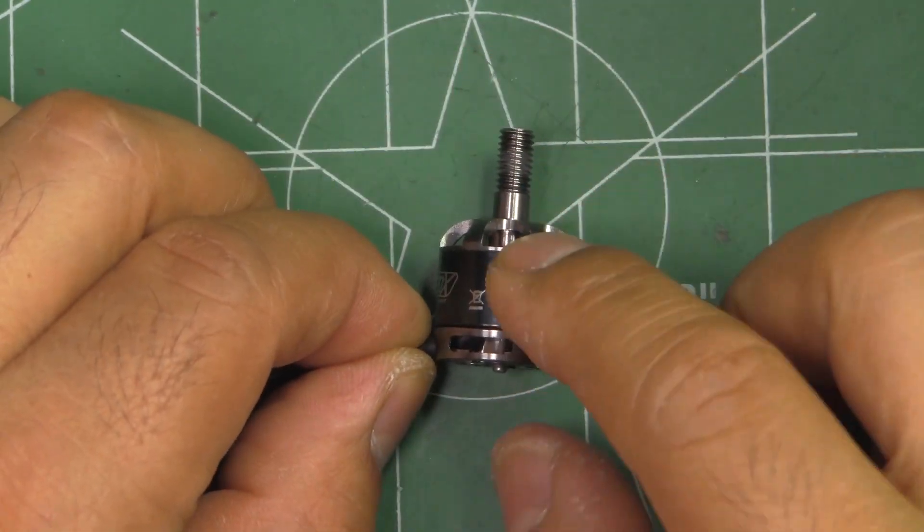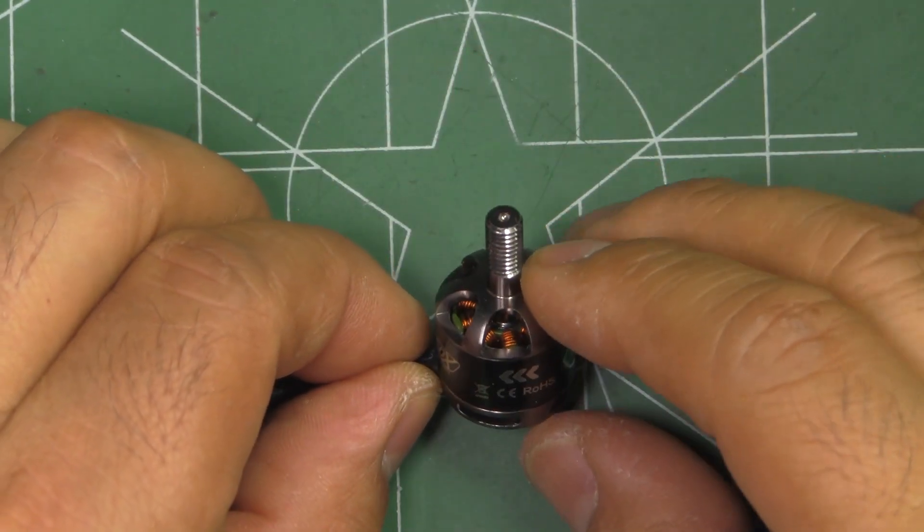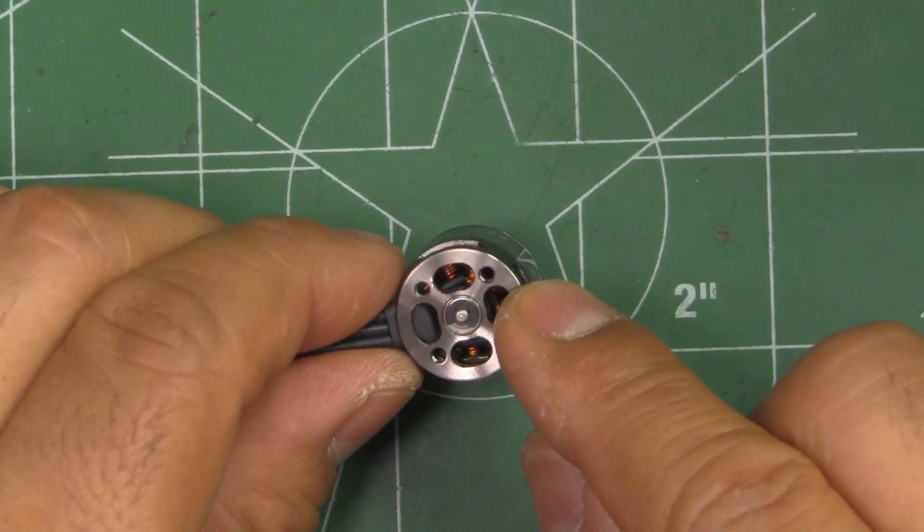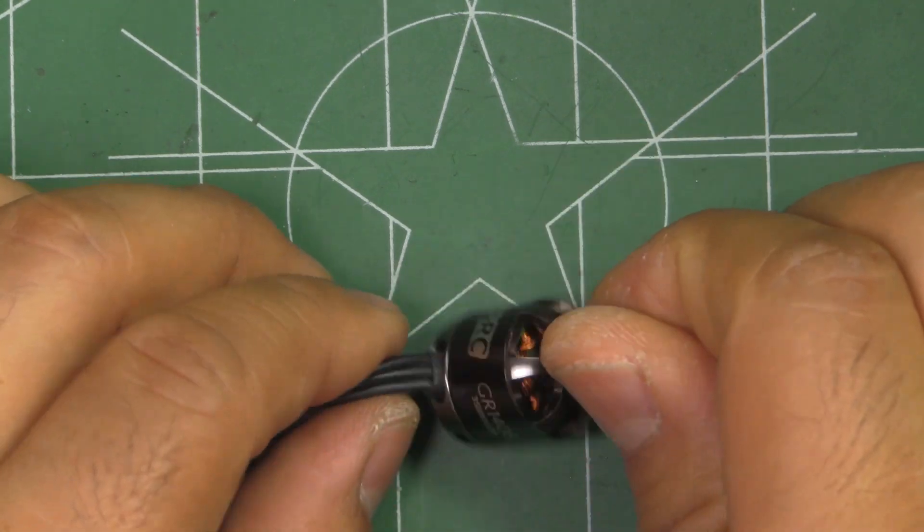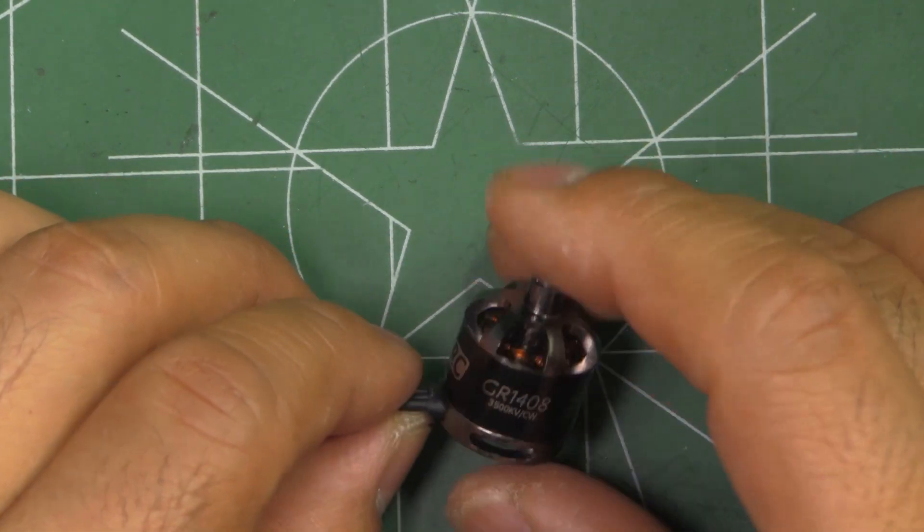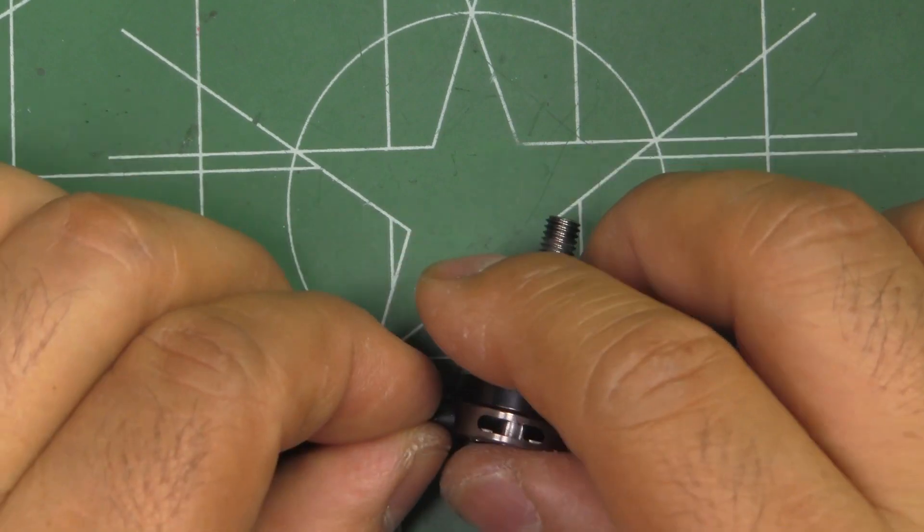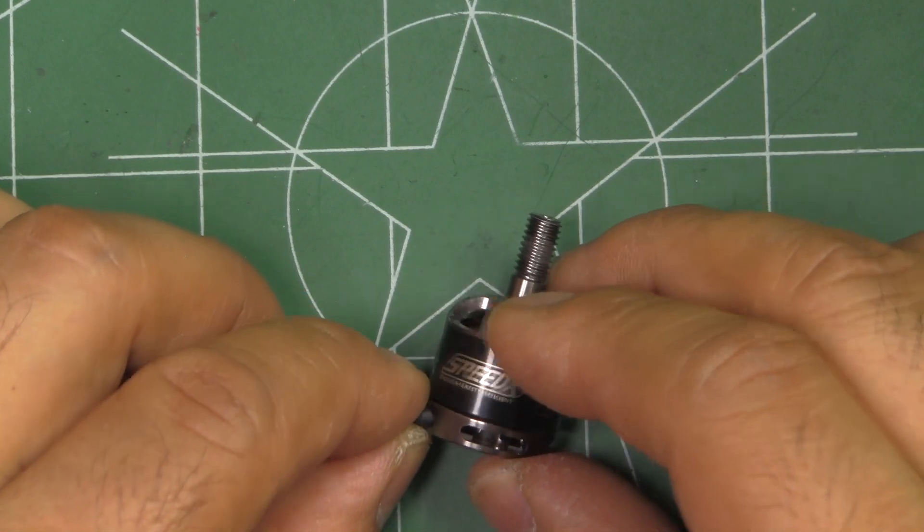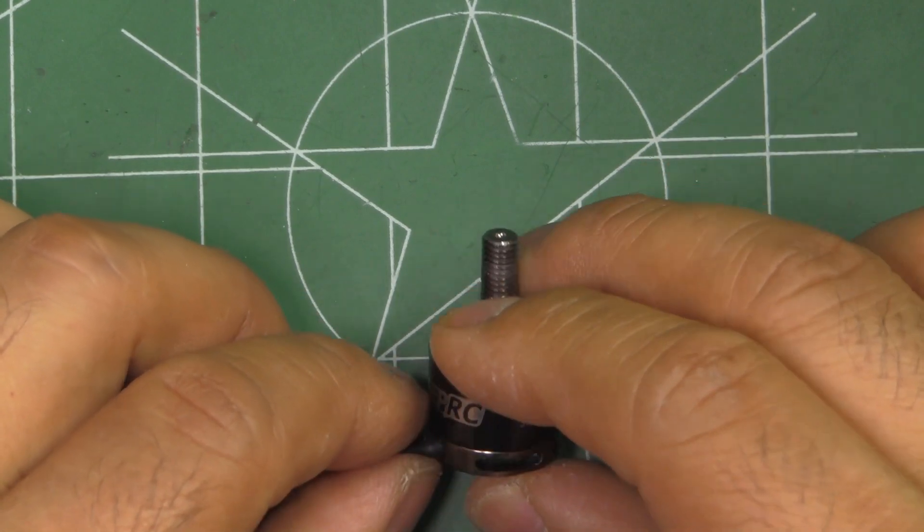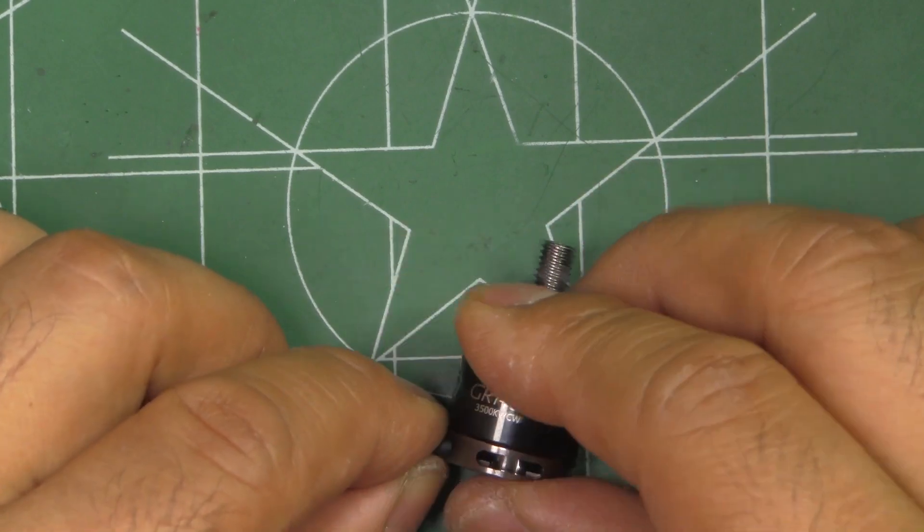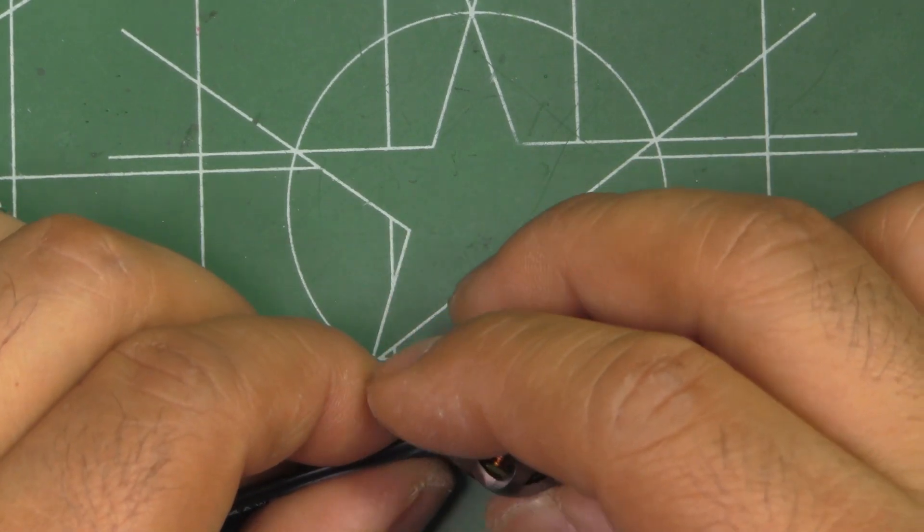So on the website they're saying it's made out of 7075 aircraft grade aluminum. They're saying the magnets are N52 curved magnets. They're saying it's rated 2s to 3s for three inch props. But as we all know, 1407s are able to run four inch props no problem. So we'll test these with four inch props on 4s and see how it works.